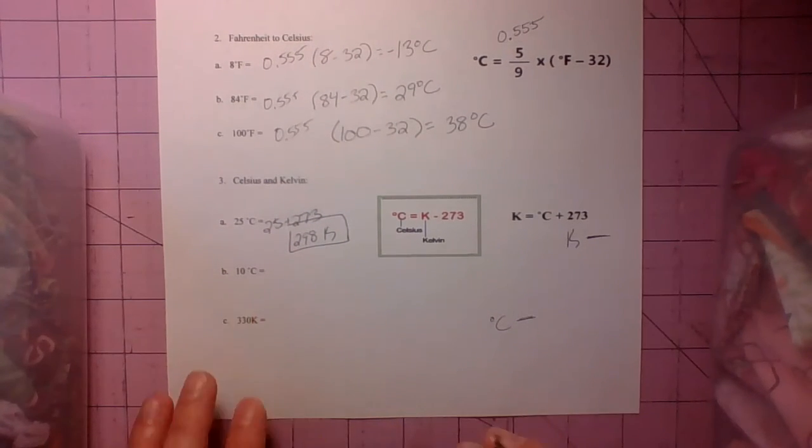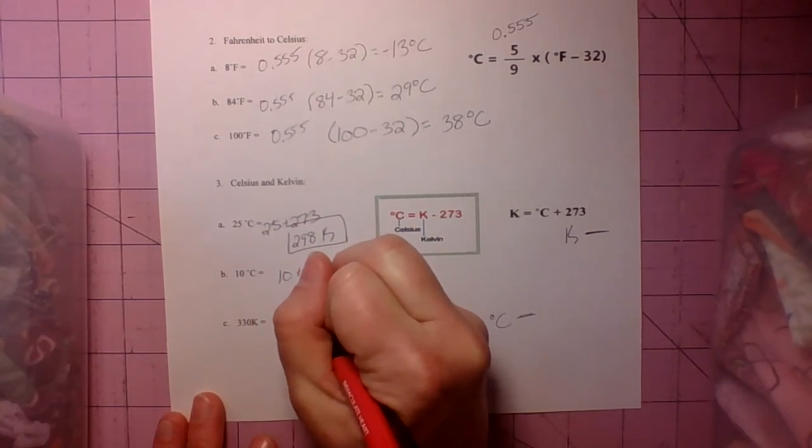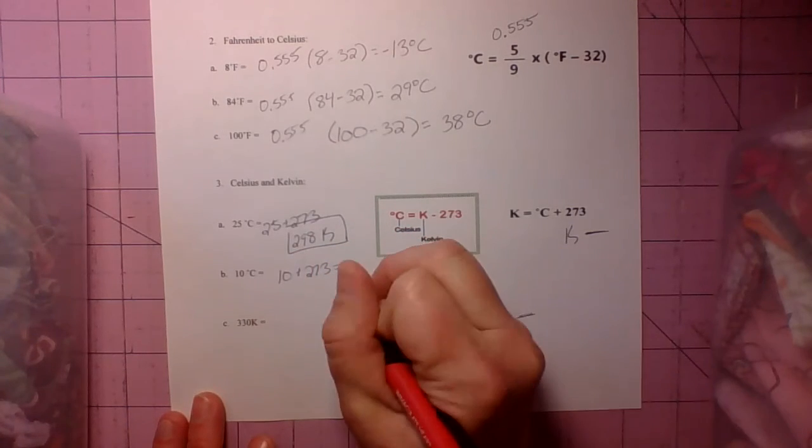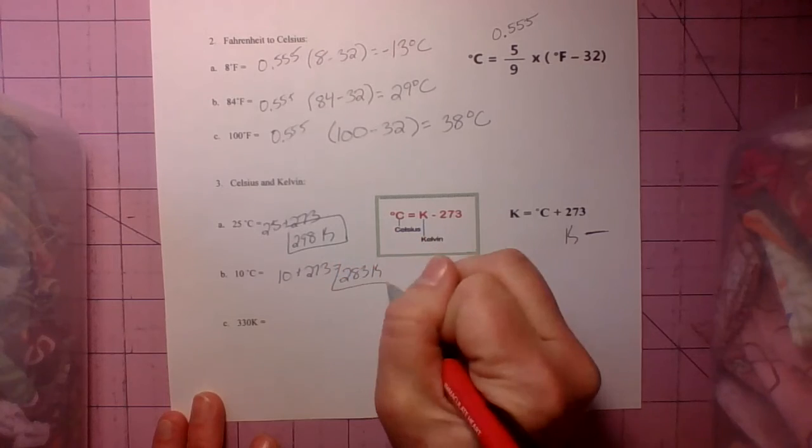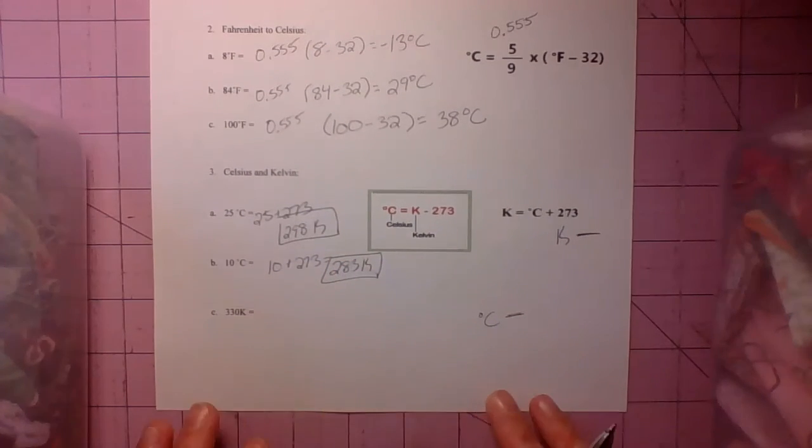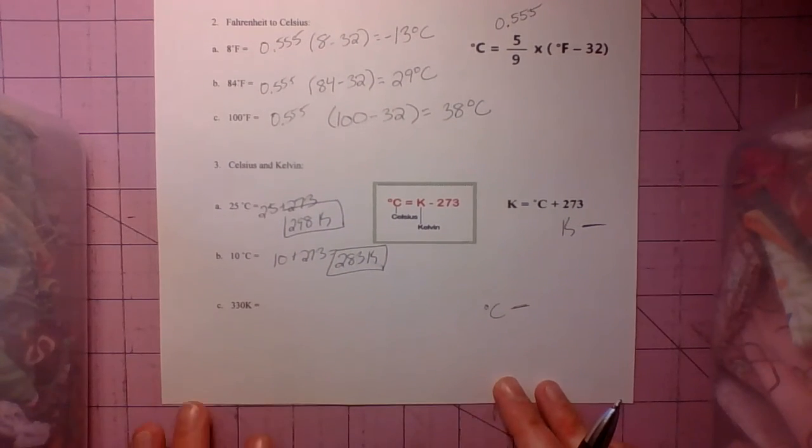So again, 10 degrees Celsius. So 10 plus 273, that's 283 Kelvin. And notice there's no degree sign for Kelvin. It's just capital K.